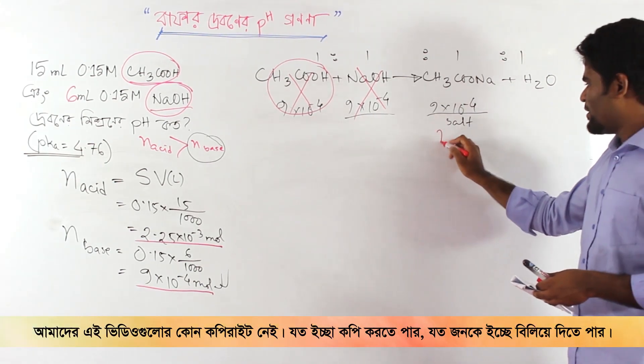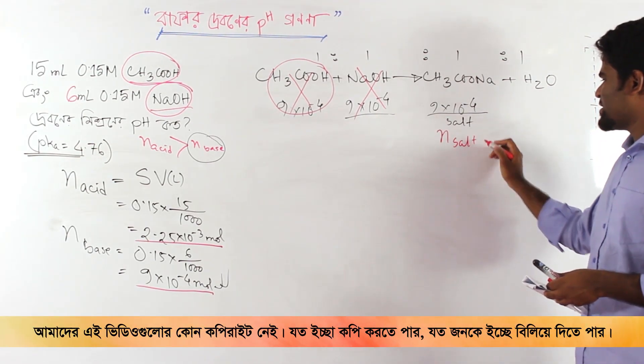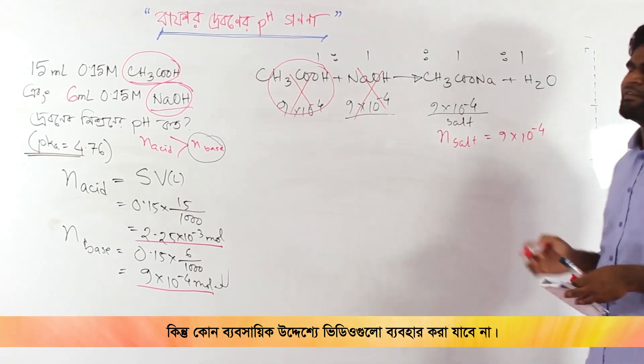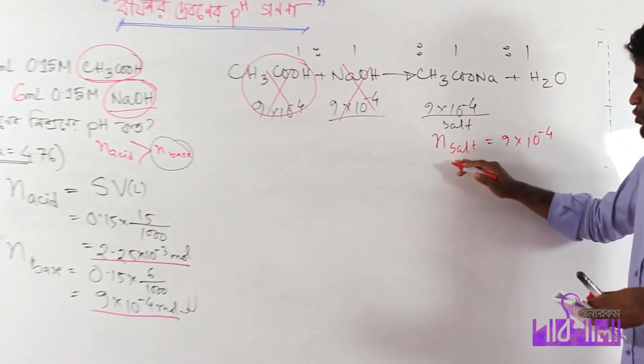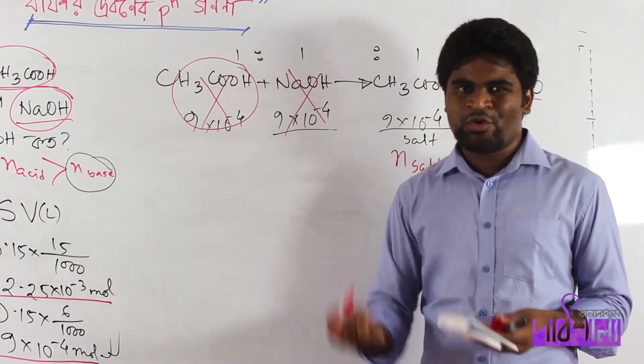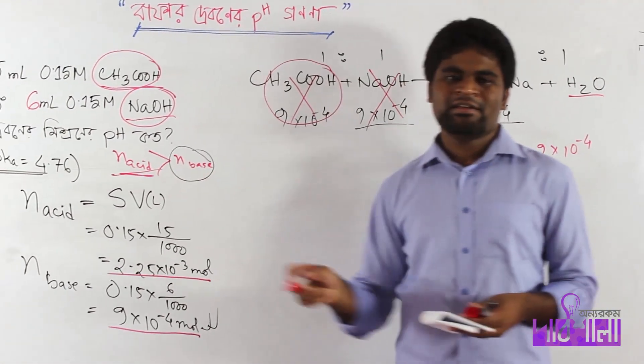The salt produced equals the n of base consumed, which is 9 into 10 to the power minus 4 mol. Here the excess acid remains.